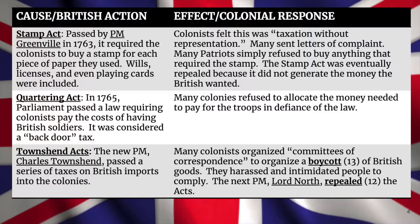Then there was the Quartering Act. In 1765, a law was passed requiring colonists to pay the costs of having British soldiers in the colonies. This was considered a backdoor tax — the British had lots of troops in the colonies and wanted to fund them using money raised from the colonists rather than from Britain itself. The colonists began to see this as paying for an occupying force used to keep them under control. Many colonial legislatures refused to allocate the money required — a form of nullification, though that vocabulary term comes in the next lesson.